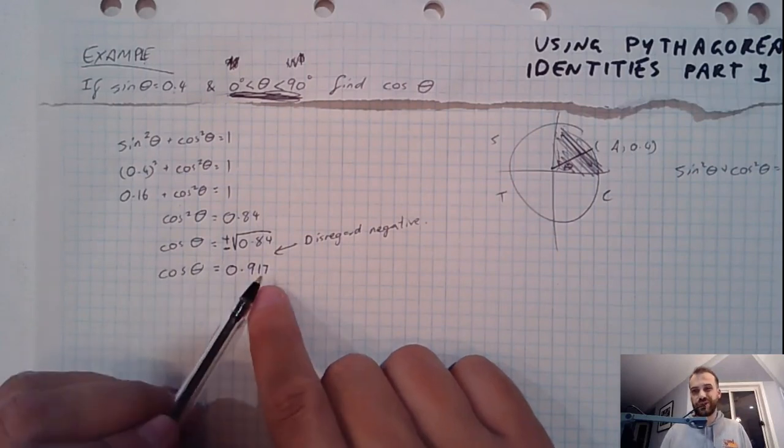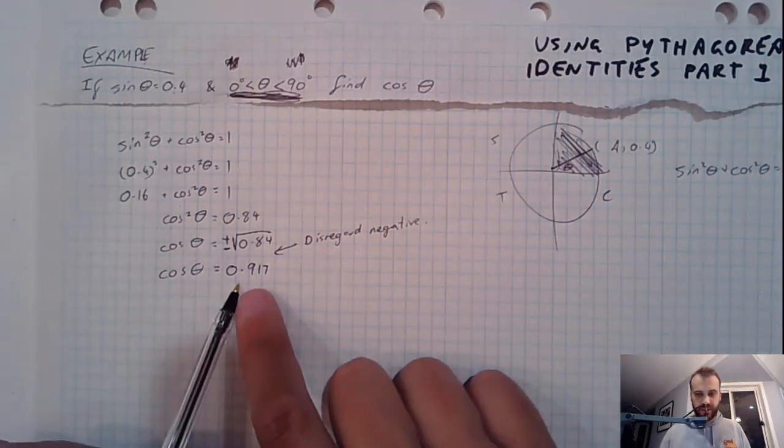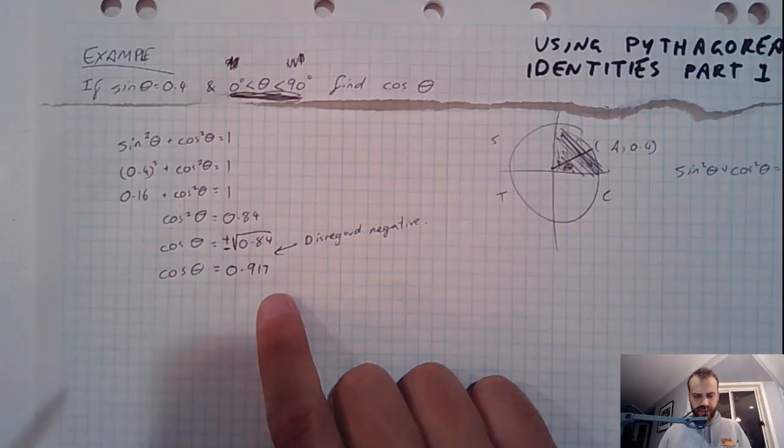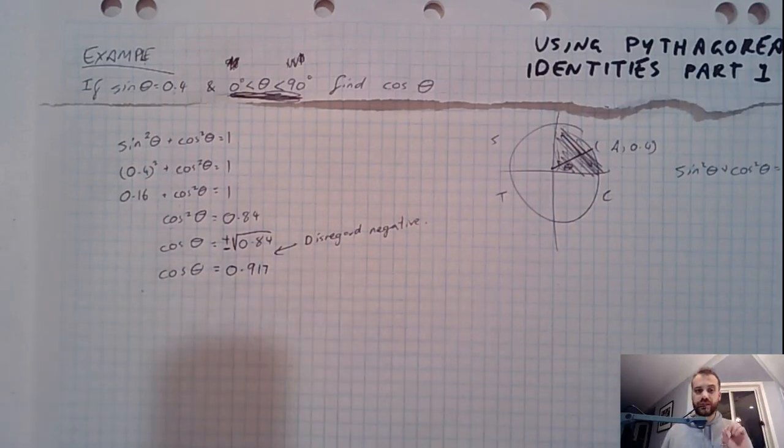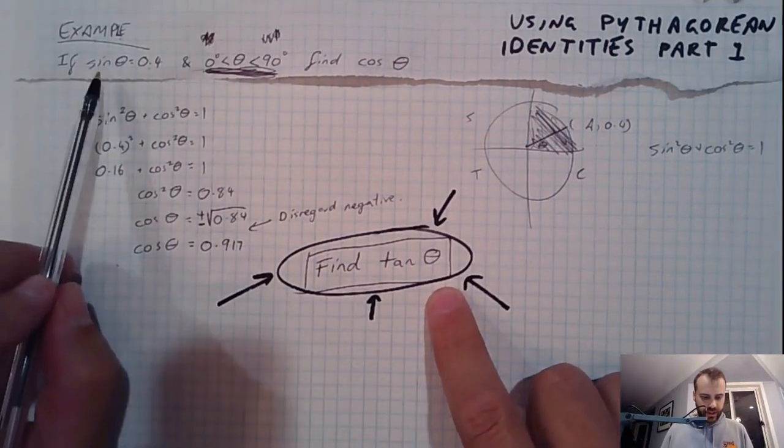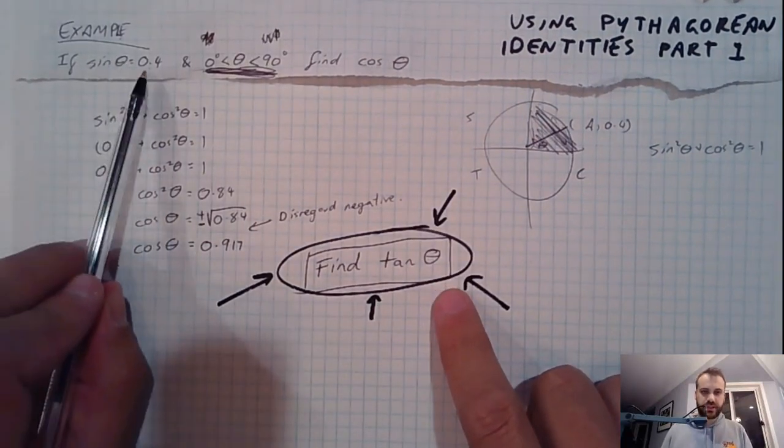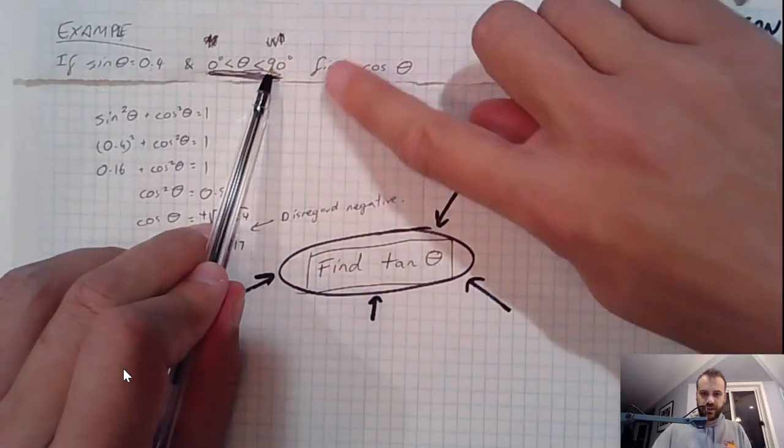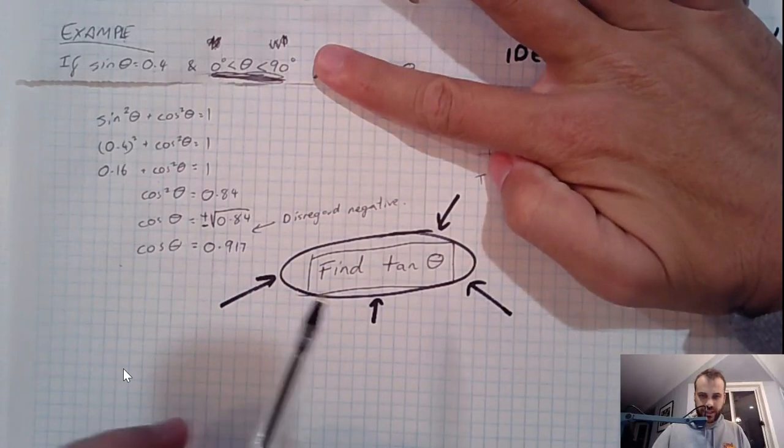We could take the inverse of cos and find what theta actually was if we wanted to. Just before we go, I might just add one small complication to the question. So here's my small complication. If I know sin theta is equal to 0.4, and theta is between 0 and 90, instead of finding cos theta, why don't I find tan theta?